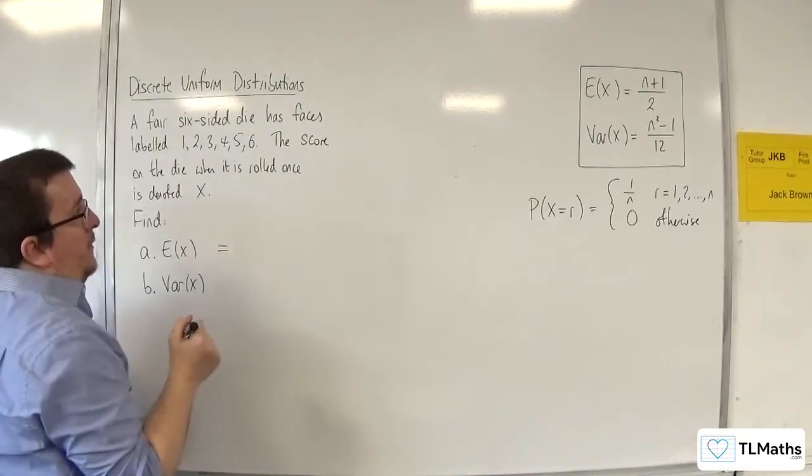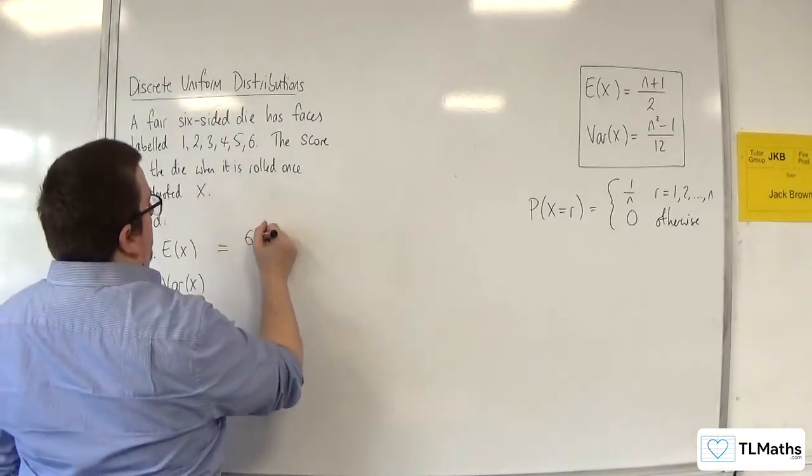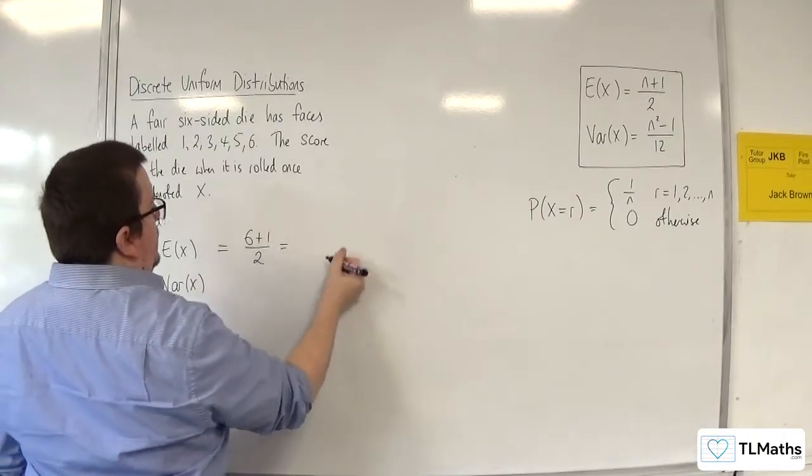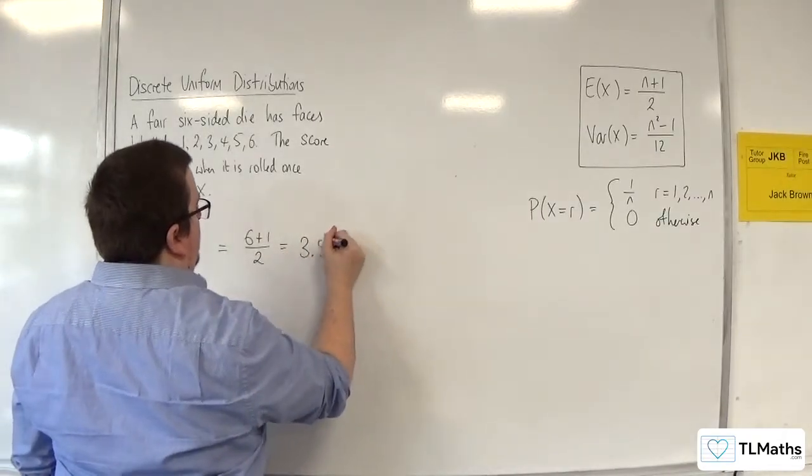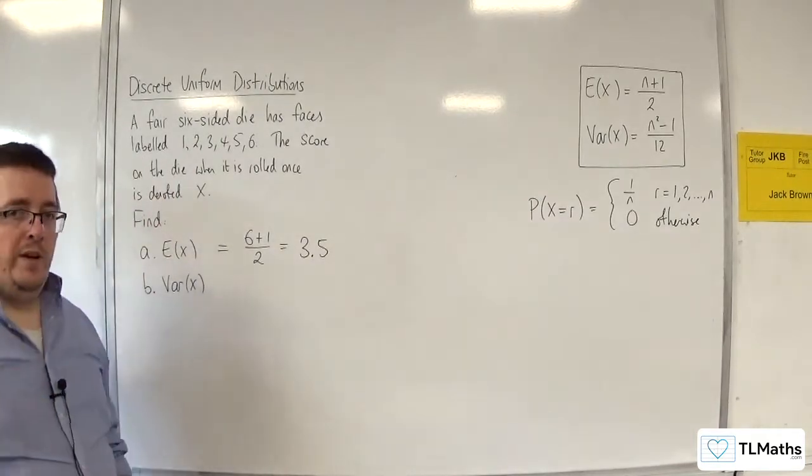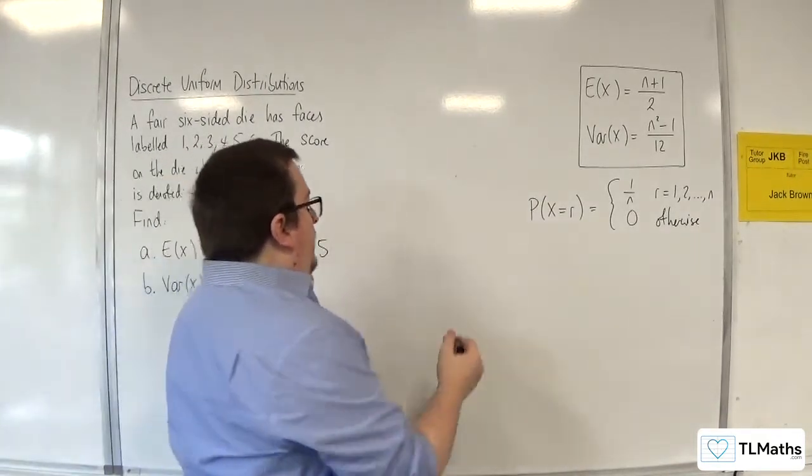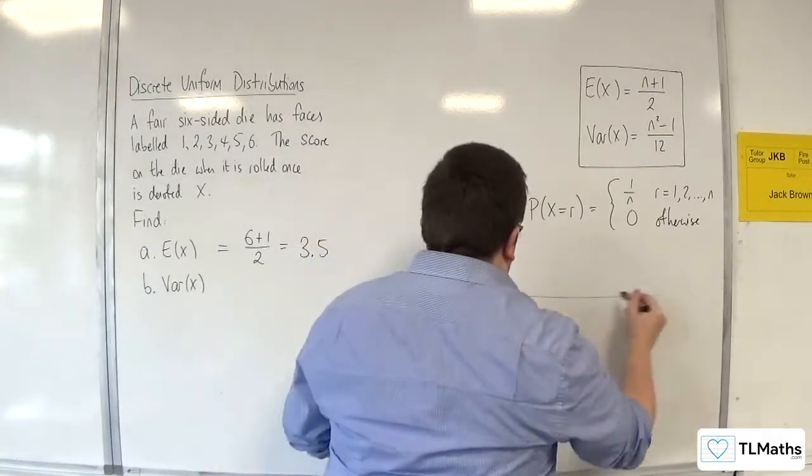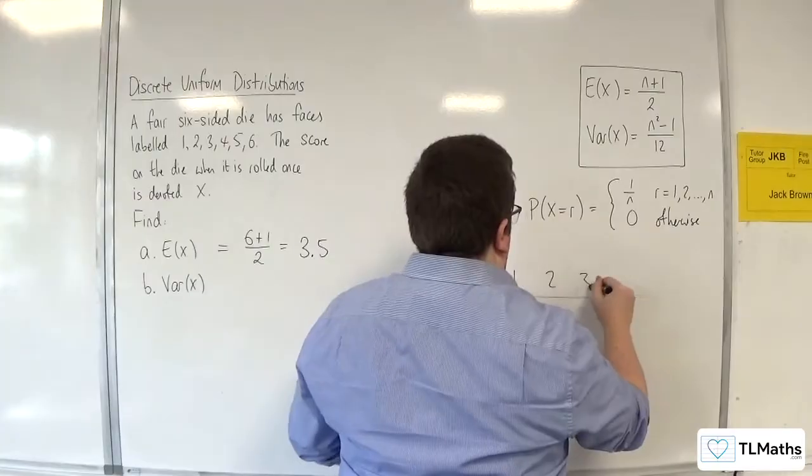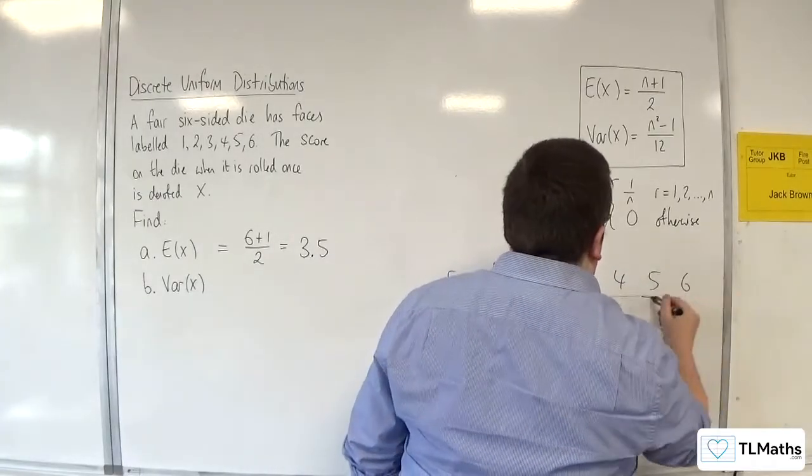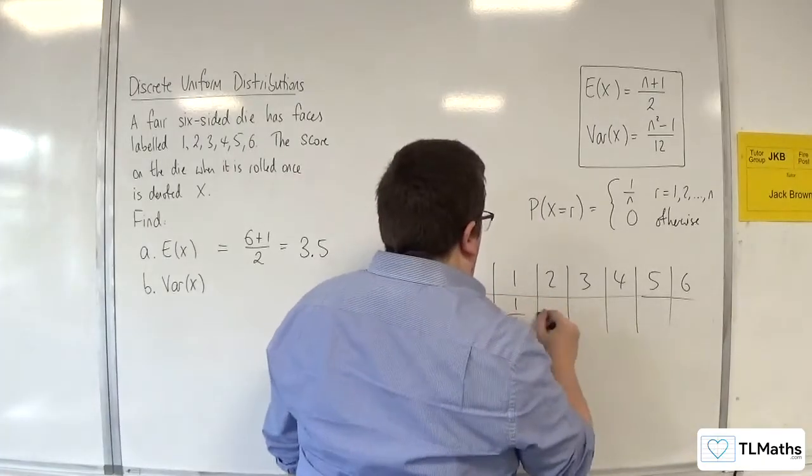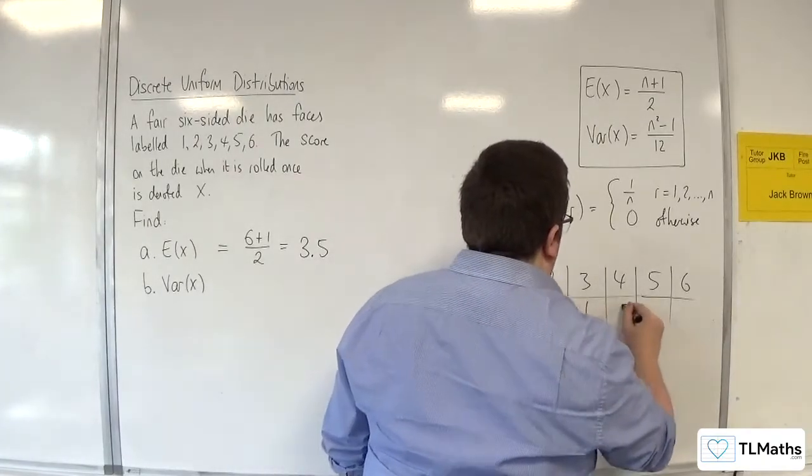So E of X is going to be 6 plus 1 over 2, so 7 over 2, so 3.5. And you would expect that, because if your distribution looks like this: 1, 2, 3, 4, 5, 6. And the probability is the same, it's a uniform distribution.